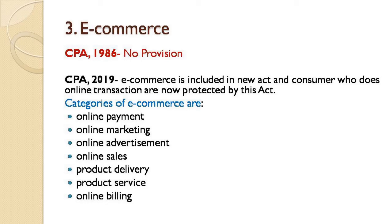The third major change is e-commerce. The 1986 Act had no provision for e-commerce. In 2019, e-commerce was included and the definition of 'consumer' was broadened — not only physical purchases but also electronic purchases are now covered under the consumer definition. Equal treatment of paper-based and electronic transactions is given. E-commerce categories include online payment, online marketing, online advertisement, online sales, product delivery, product service, and online billing. Any type of electronic transaction is now fully secured under the Consumer Protection Act 2019.